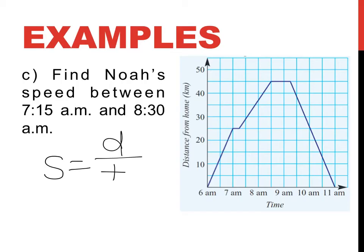What was his distance at 7:15? At 7:15 he went from kilometer 25. At 8:30 he'd finished kilometer 45. So if he started at kilometer 25 and finished at 45, that's a distance of 20 kilometers.